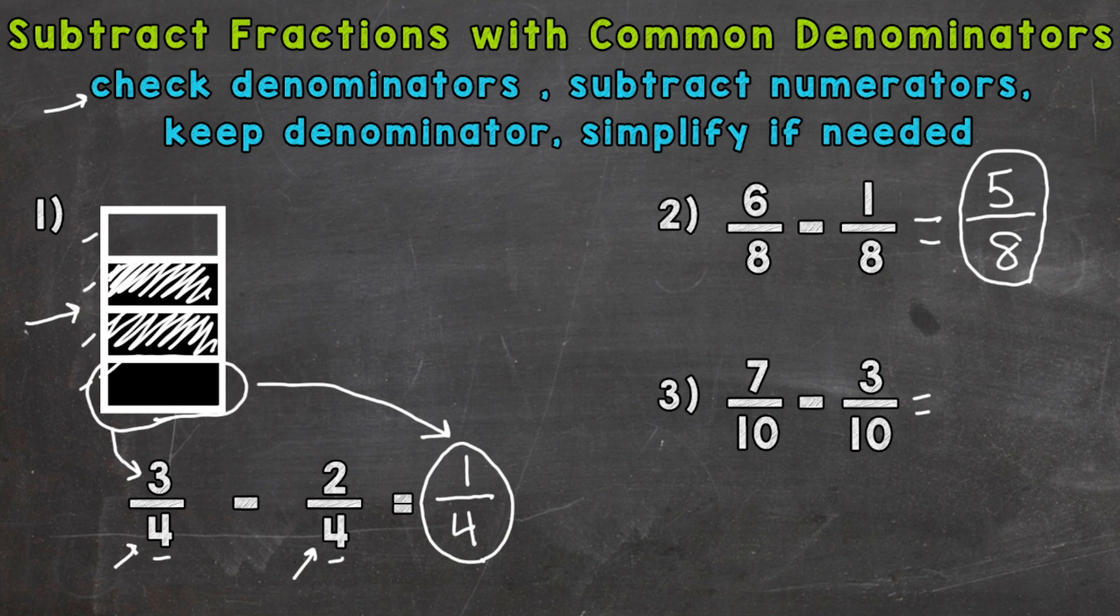Subtract our numerators. Seven minus three is four. Keep our denominator of ten the same and simplify if needed.